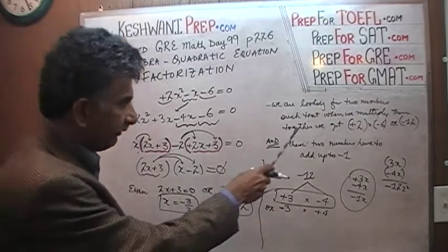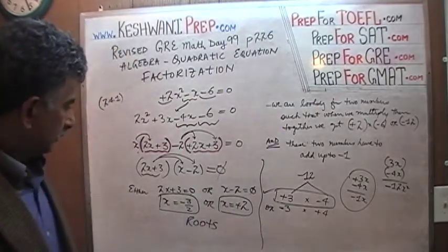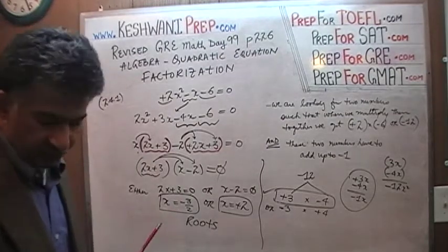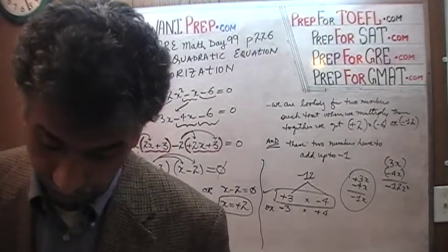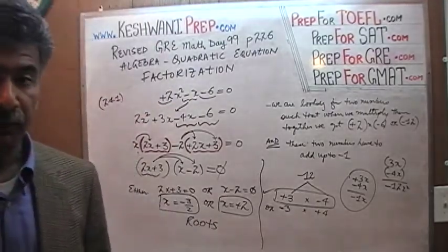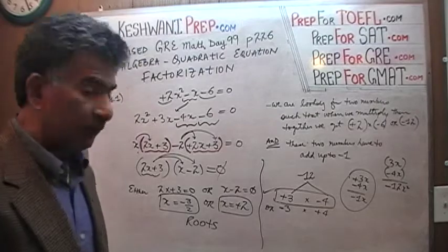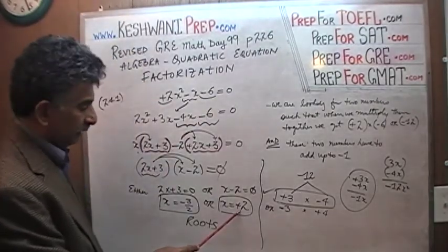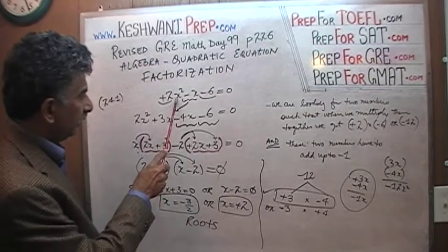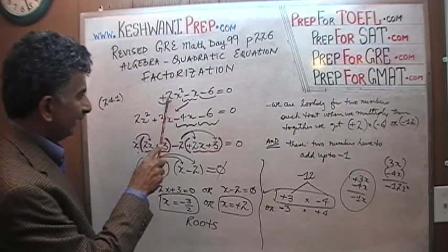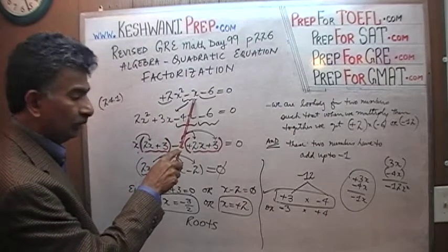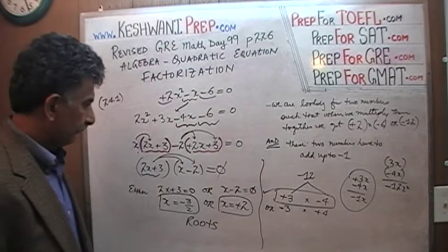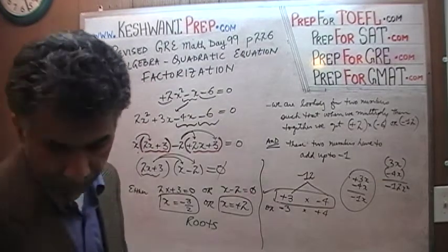I want to verify. I'll quickly verify the easier one: x equals 2. Substituting into 2x squared minus x minus 6: 2 squared is 4, 4 times 2 is 8, 8 minus 2 is 6, and 6 minus 6 is 0. It works. That's all — we're done.